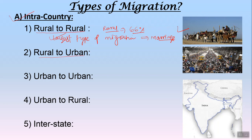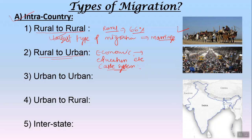Another type is rural to urban migration, which is more about economic migration and education. The caste system is also a factor — in urban areas there is anonymity, so the caste system is less relevant and class system is more relevant. To escape caste-based discrimination or untouchability in rural areas, people move to urban areas. Economic betterment, job opportunities, and education for graduation are also key reasons.